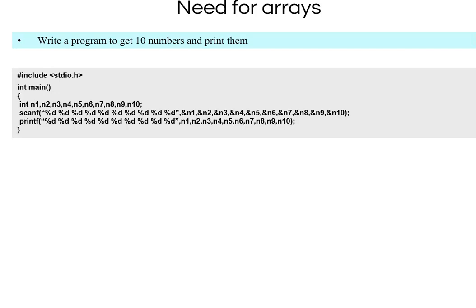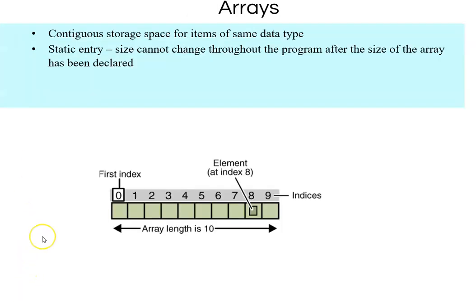Now imagine if you needed 100 variables, a1 to a100. You'd have to declare 100 variables, write 100 scanf statements with 100 percentage D format specifiers, and 100 printf statements. The program would become very large and cumbersome.